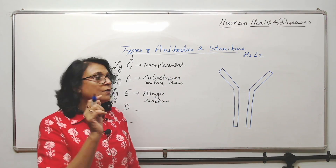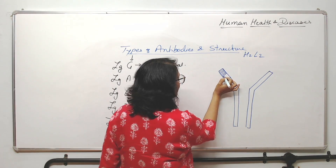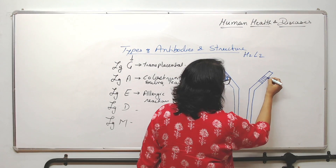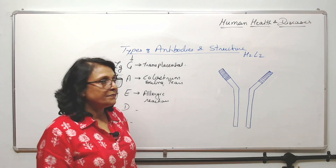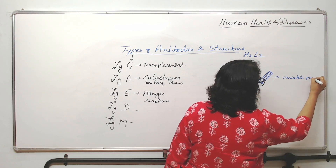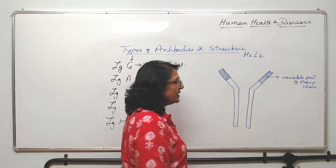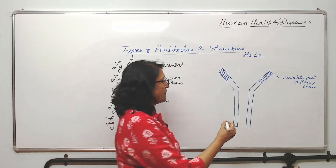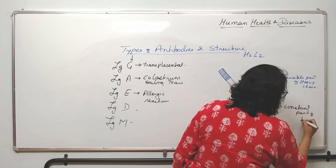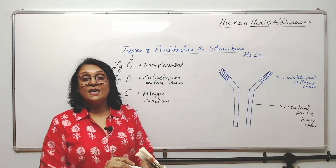In the heavy chain, towards the fork, one part is variable — meaning it can change. The other part is constant, meaning it remains as it is. So we have the variable part of the heavy chain and the constant part of the heavy chain, giving us two heavy chains.